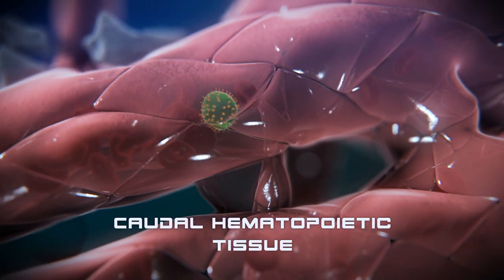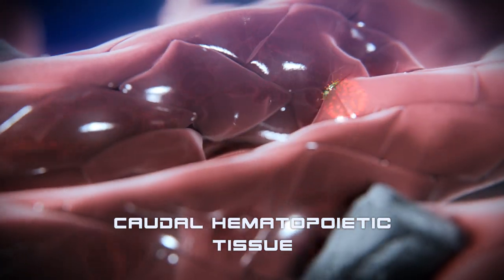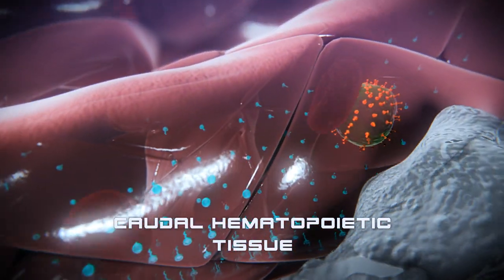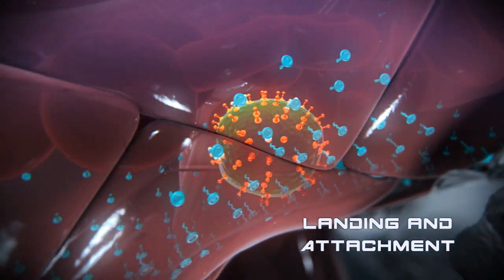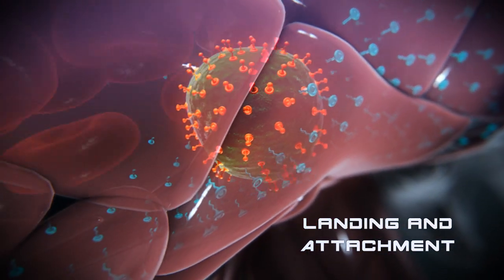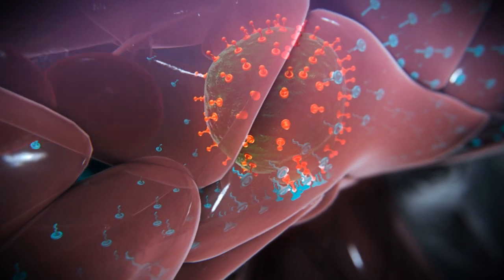This stem cell has CXCR4 receptors on its surface and comes into a bed of SDF1, which is the ligand for CXCR4. This allows the attachment of the stem cell.